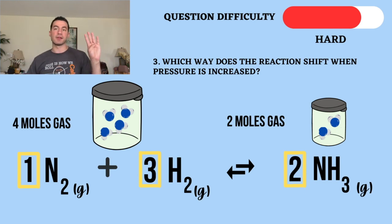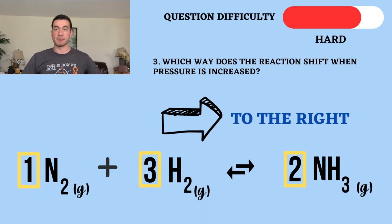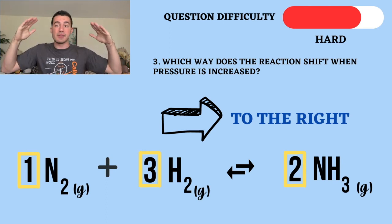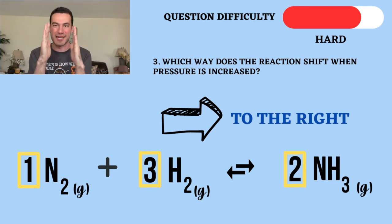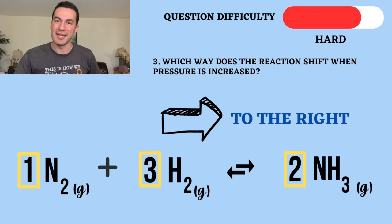So we have four moles of gas in the reactants, two moles of gas in the product. The equilibrium is going to end up shifting right because higher pressures favor lower moles of gases. Given that it's easier to squeeze two moles of gases into a smaller space. So that is exactly what ends up happening, shifting to the right.